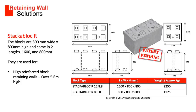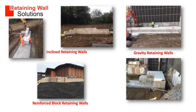Stacker Block R is suitable for walls over 5.6 metres in height. The images on this slide are examples of inclined retaining walls, gravity retaining walls and reinforced block retaining walls.